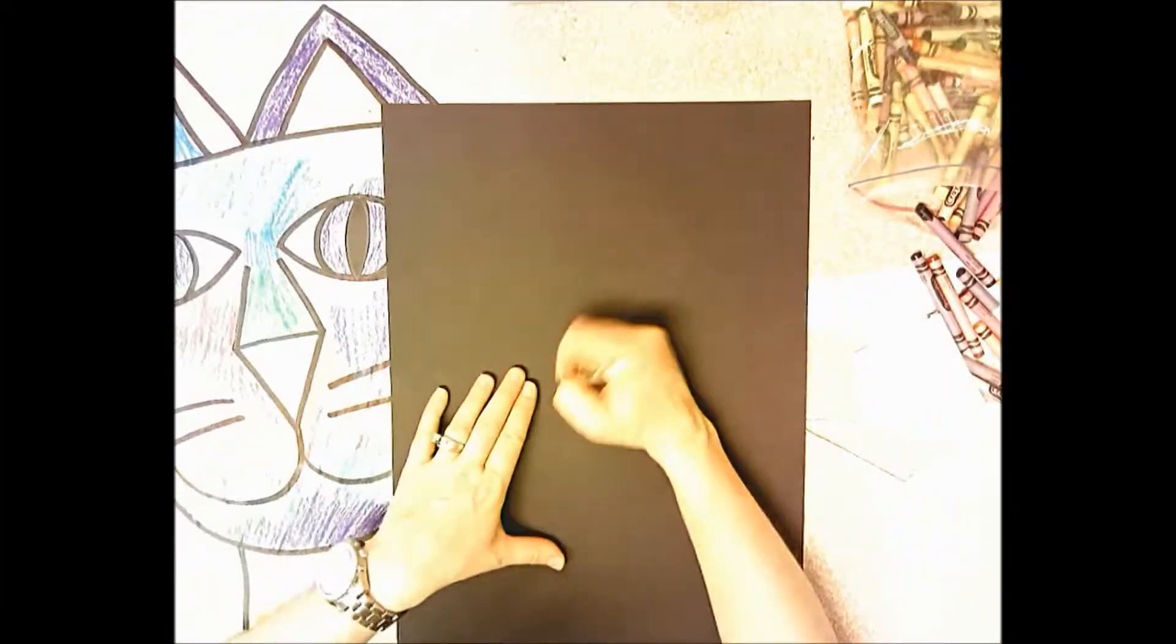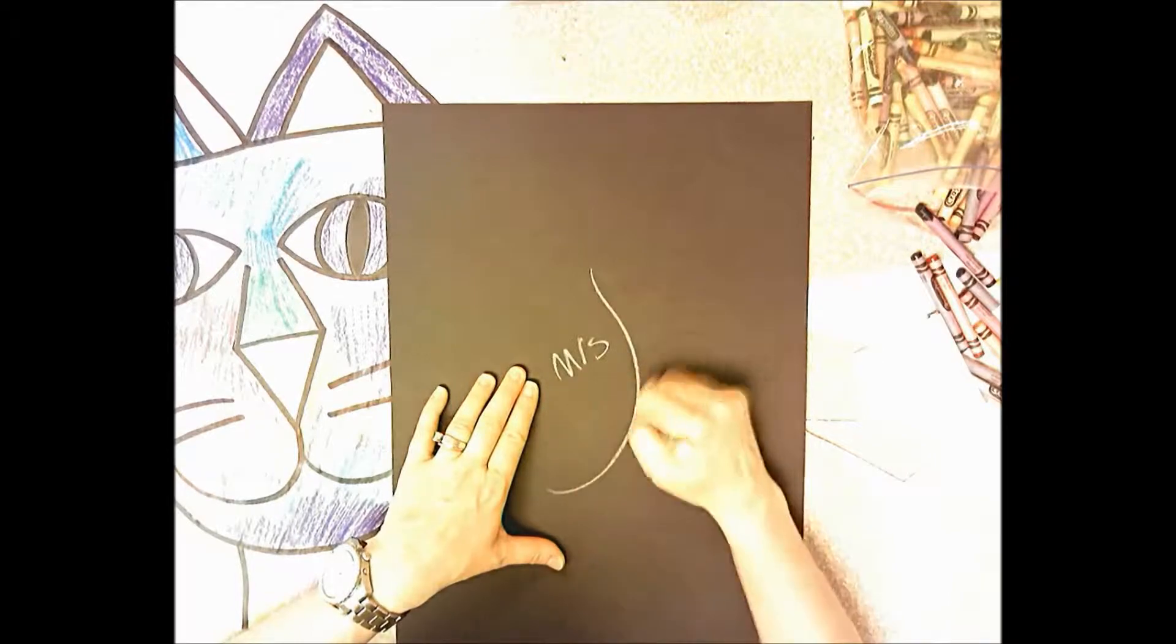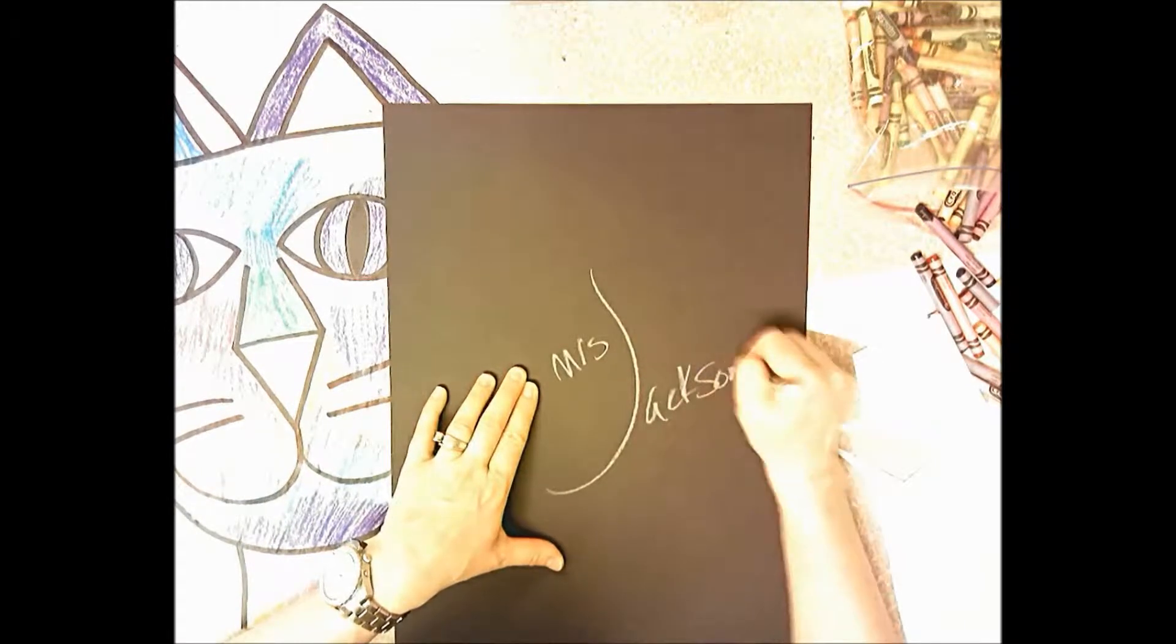So then you're going to get a black paper. You're going to use a white crayon to write your name and the day you have art: Day A, Day B, Day C.